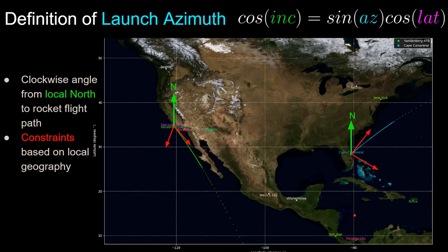Launch sites have constraints on their launch azimuth angles based on their surrounding geography. For example, at Cape Canaveral, you cannot launch north or west since the rocket would be flying over populated areas. Therefore, Cape Canaveral launches are restricted to launch azimuth between 35 and 120 degrees. Similarly, at Vandenberg, rockets cannot launch north or east, and they are limited to the southeast to make sure that the rockets don't fly directly over Los Angeles, but under the right lighting conditions, the launches will still be visible from LA.